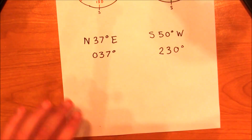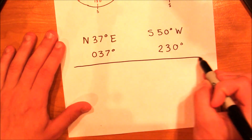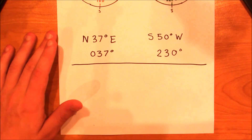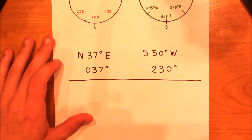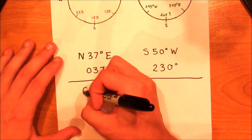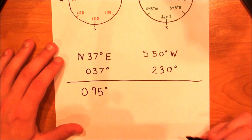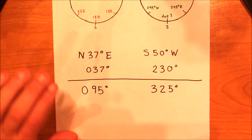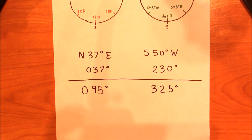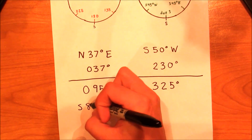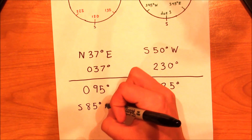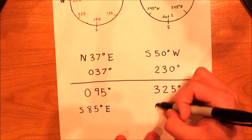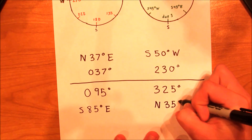Now let's go ahead and take a look at the opposite way. I'm going to give you two azimuth coordinates and ask you to convert them to quadrant coordinates. The first one is 095 and the second one is 325. Go ahead and pause the video and try to convert these to quadrant. The answers are: south 85 degrees east and north 35 degrees west.